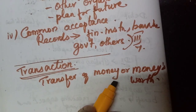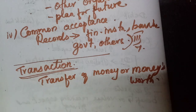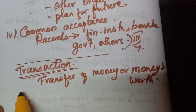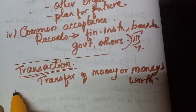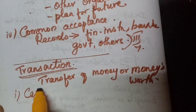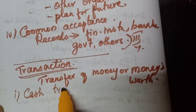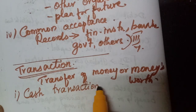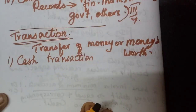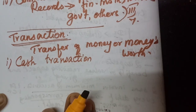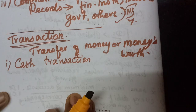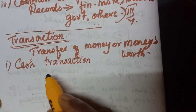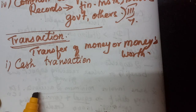This transaction can be divided into three types. First, cash transaction; second, bank transaction; and third, credit transaction. In the new syllabus they have given three types of transactions, whereas previously we studied only cash and credit transactions.